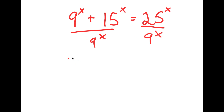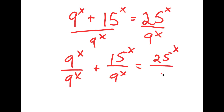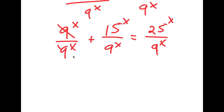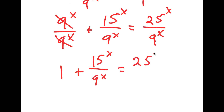This results in 9 to the power of x over 9 to the power of x plus 15 to the power of x over 9 to the power of x is equal to 25 to the power of x over 9 to the power of x. Now 9 to the power of x and 9 to the power of x cancel out, so I get 1 plus 15 to the power of x over 9 to the power of x is equal to 25 to the power of x over 9 to the power of x.